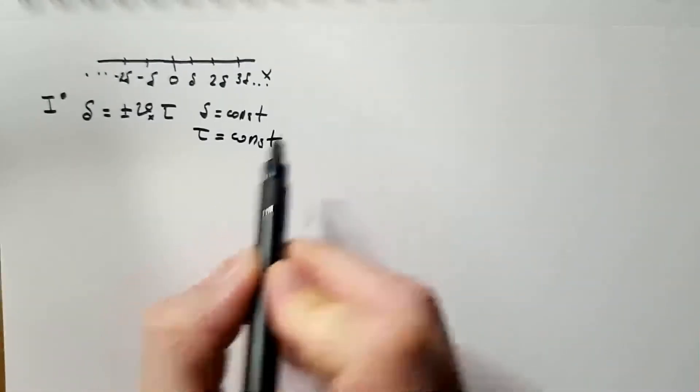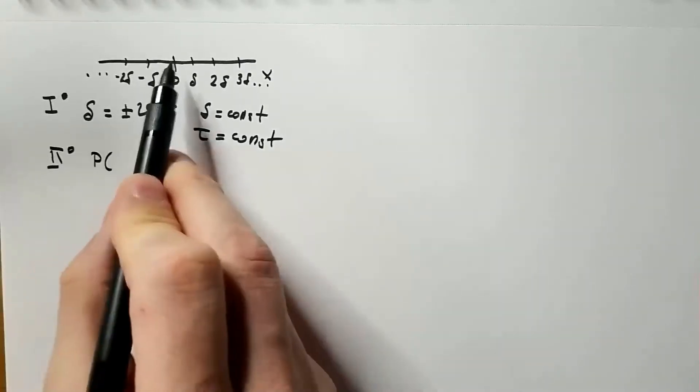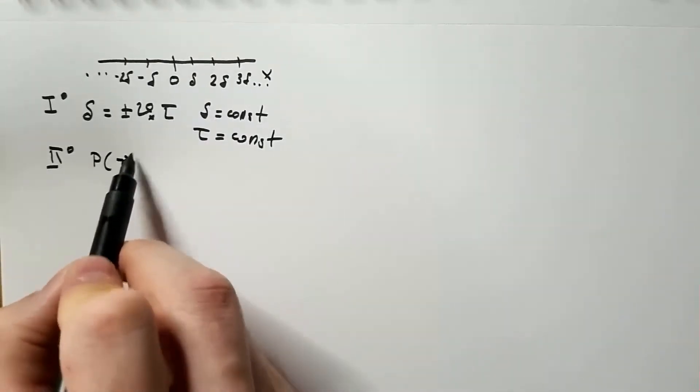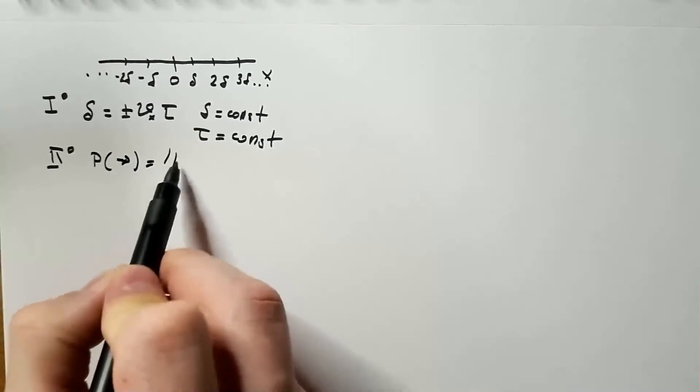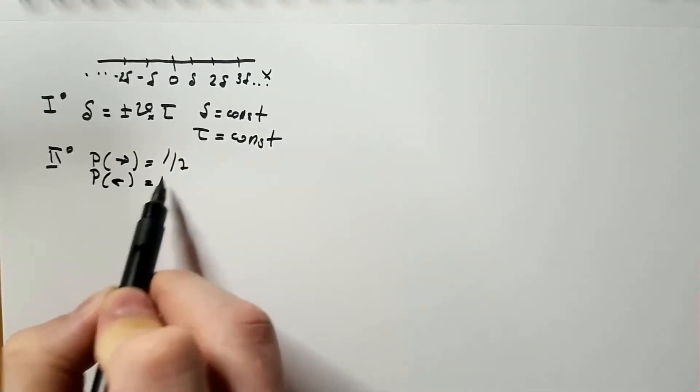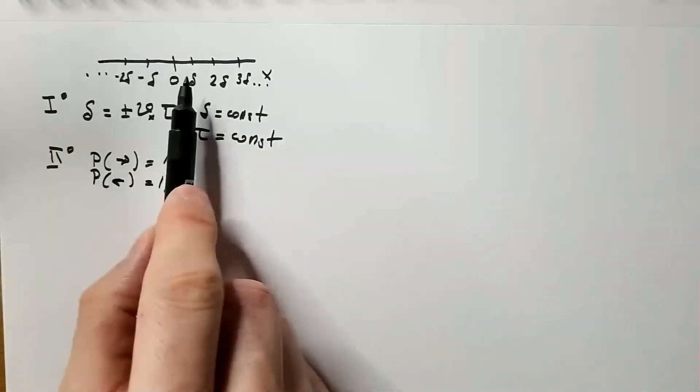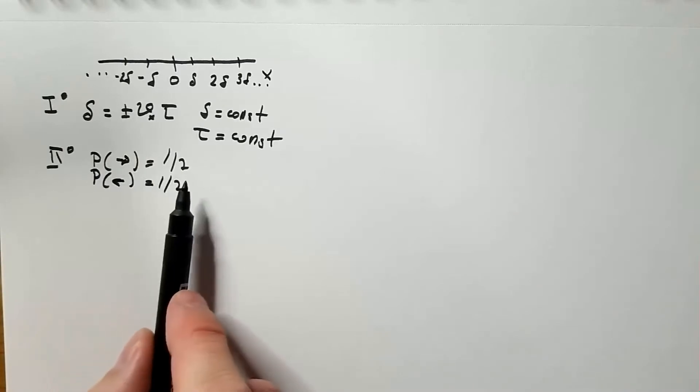Very intuitive and simple. Where delta is constant, so each jump is a constant distance, and each occurs after tau seconds. So, this is also constant. Rule number two says that probability to go right is equal to probability to go left. Which means, both of them are one half.